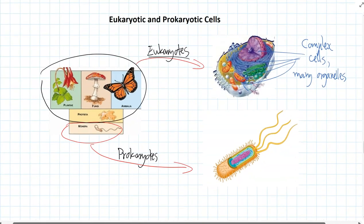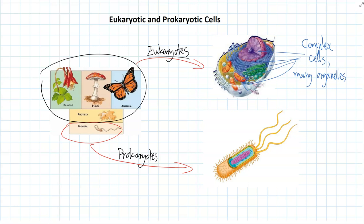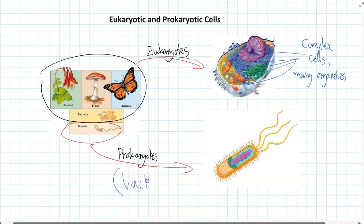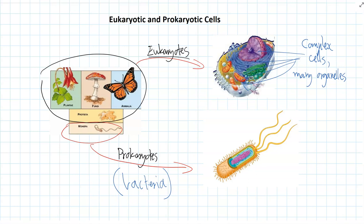Prokaryotes, like I said earlier, evolved first. So they have much more simple cells — they barely have any organelles at all. Remember, when we're talking about prokaryotes, we're only talking about bacteria. For a billion years or more on Earth, the only living things were bacteria. They evolved first, they're the most simple, and they have the fewest organelles.